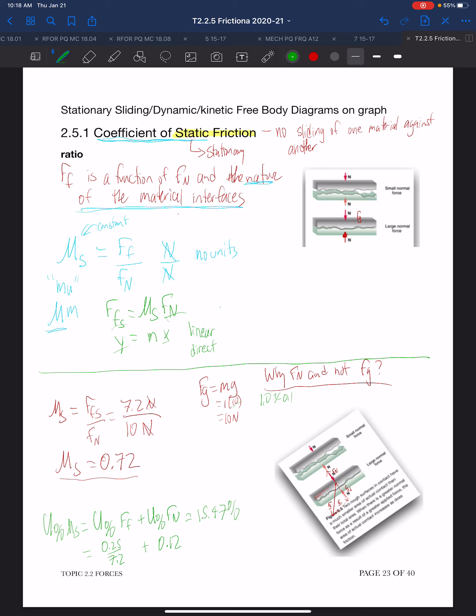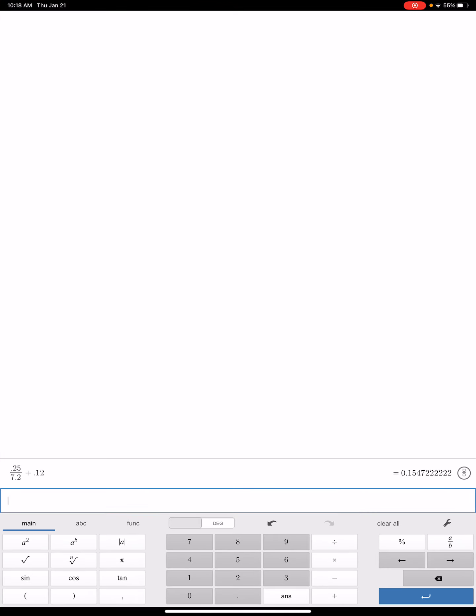To find the absolute uncertainty in the mu s, that is going to be the mu s times the percent uncertainty in mu s. So 0.72 times 0.1547, which gives us 0.1114.